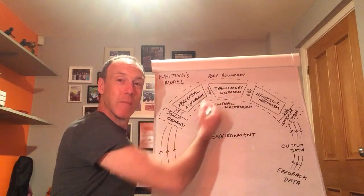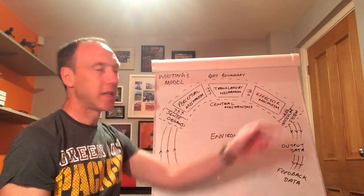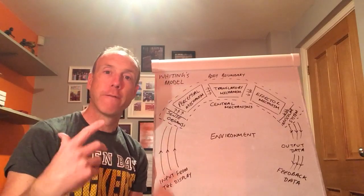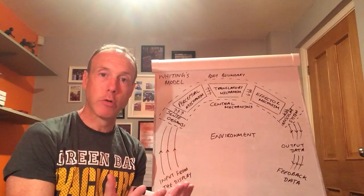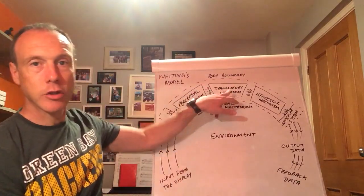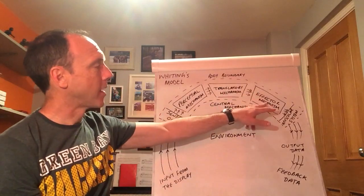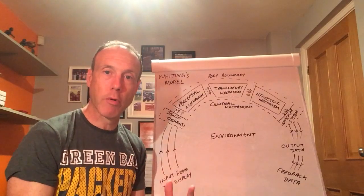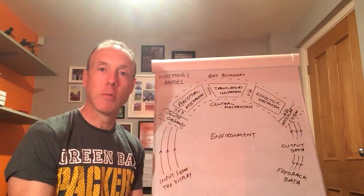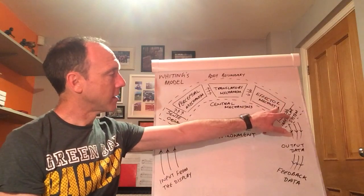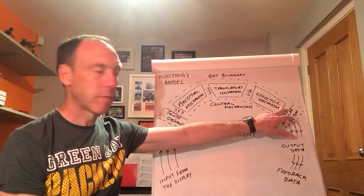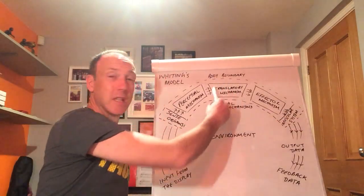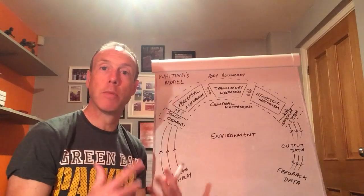Once that decision is made within the translatory mechanism it's then passed on to the effector mechanism. Now the effector mechanism is essentially the mechanism that fires the muscles, it's about creating the motor program. So once the decision has been made in the translatory mechanism it's then passed to the effector mechanism and it's essentially converted into a motor program, a series of impulses that are going to be sent to the muscles. So the effector mechanism then, once that motor program has been formed, then passes those impulses into the muscular system for the response, the decision to be affected, to be put into effect.